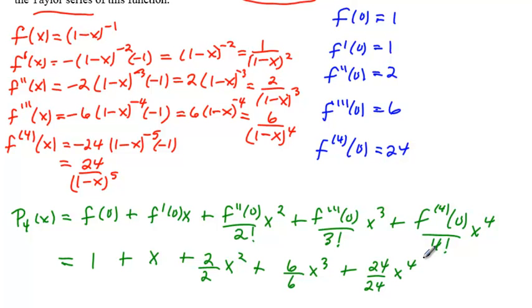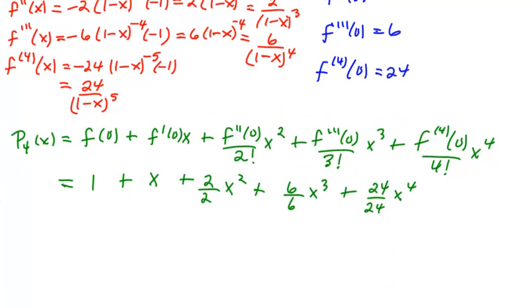Notice how each of the factorials is cancelled here, and what we end up with, if we move down a little bit, for our polynomial, our 4th degree polynomial here is 1 plus x, plus x squared, plus x cubed, plus x to the 4th.